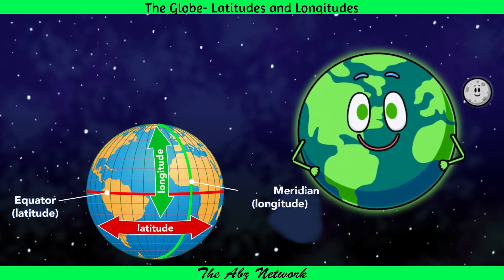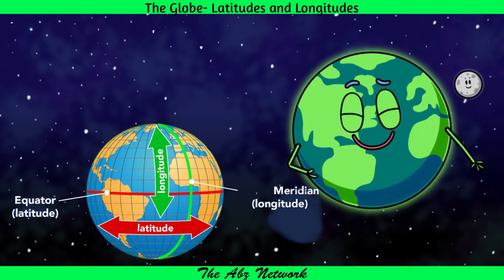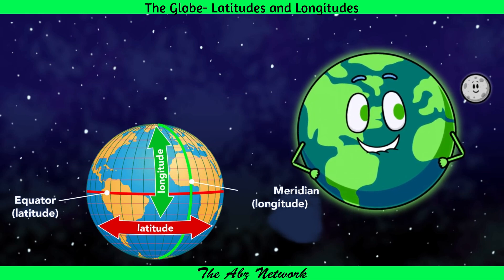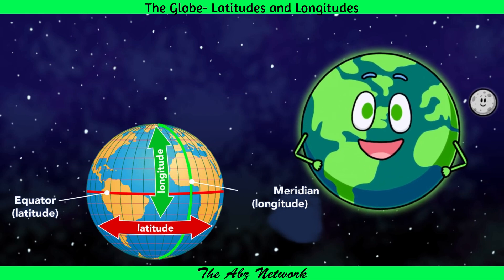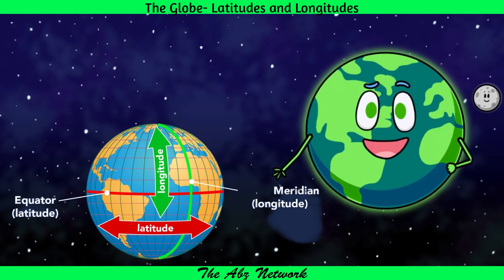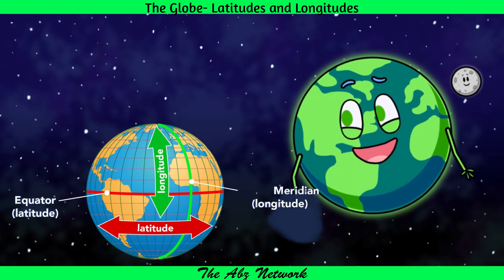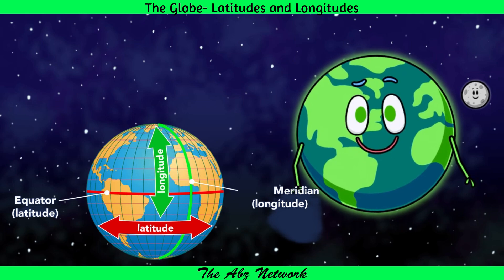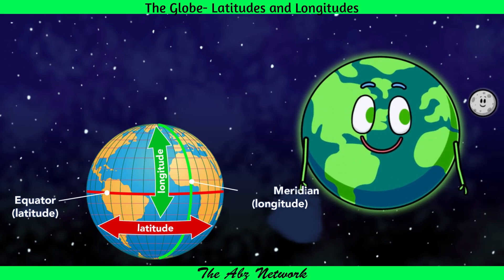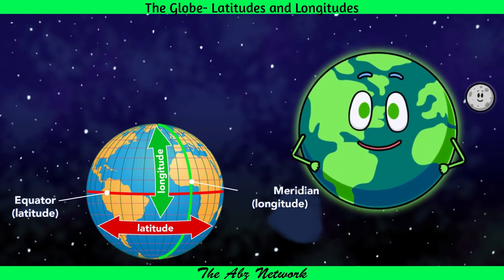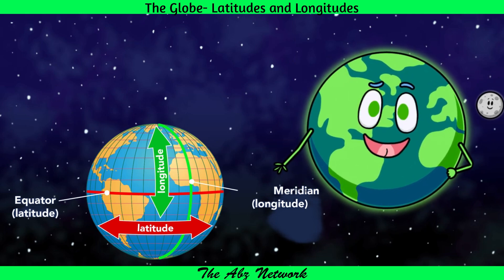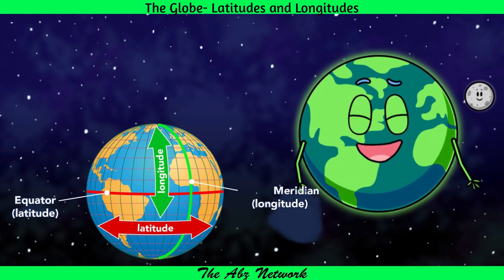Now the next topic is meridians or longitudes. Meridians or longitudes are a set of imaginary lines running from the North Pole to the South Pole. The zero degree meridian that passes through Greenwich is known as the Prime Meridian, which divides the earth into the eastern and western hemisphere.